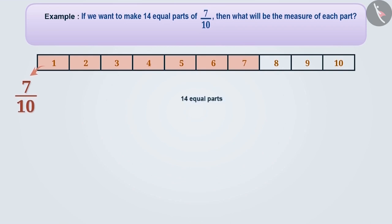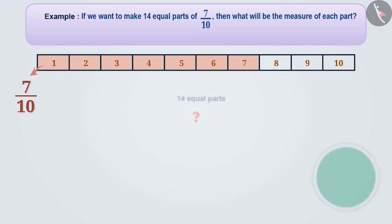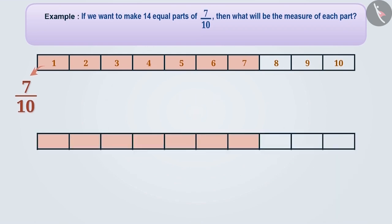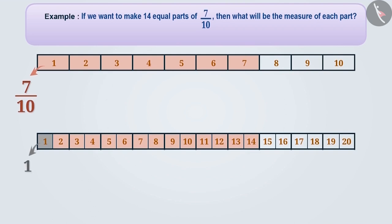Now can you guess how we will make 14 parts of the shaded part? Give it some thought. If we make 2 equal parts of each part, then we will have 14 equal parts of the 7 by 10 shaded region. As you can see, here 1 part is 1 of all 20 parts of the complete strip, which we denote by the fraction 1 by 20. Therefore, the measurement of each part will be 1 by 20.